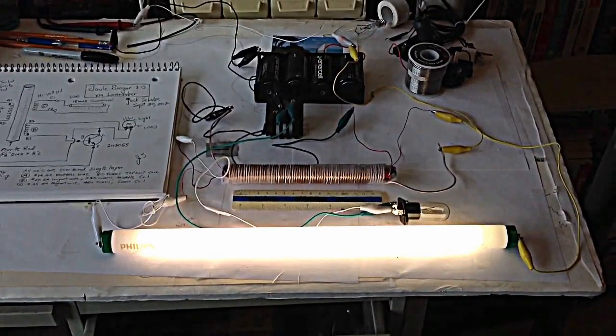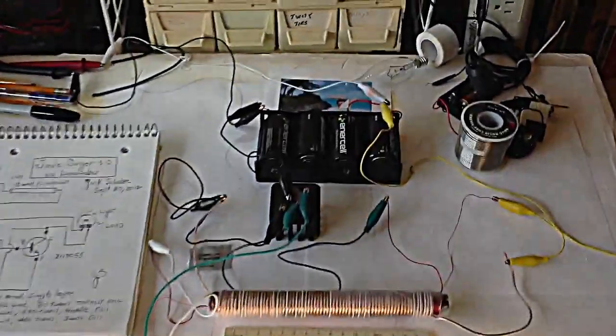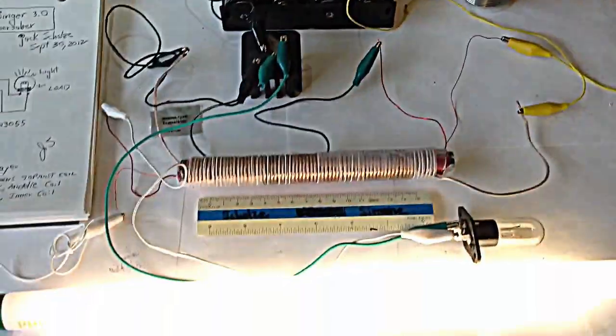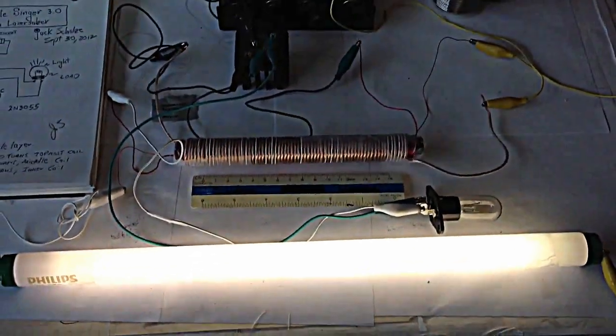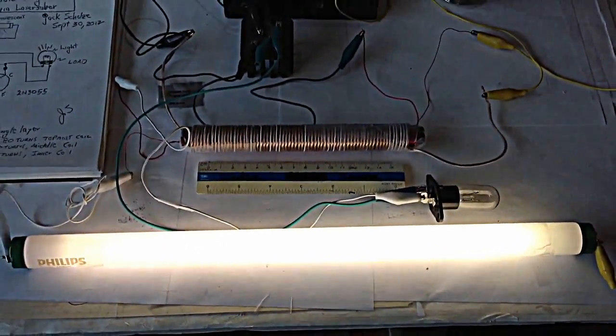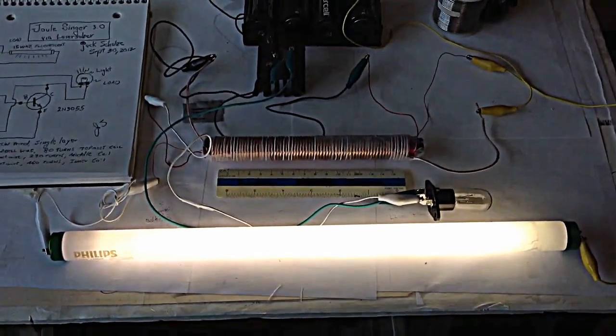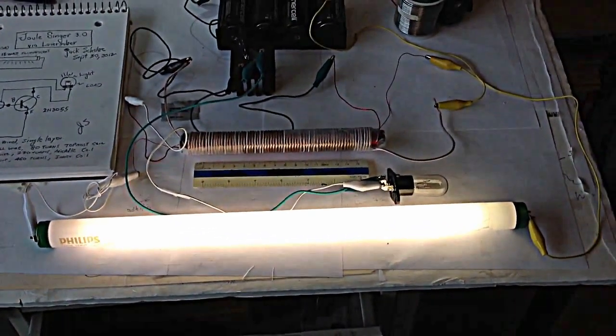I'm running a fluorescent light off of a 6-volt battery pack, and I have a special coil wound. It's three layers: one layer 26-gauge wire, 20-gauge wire, and then 14-gauge wire on the top. And it does oscillate.